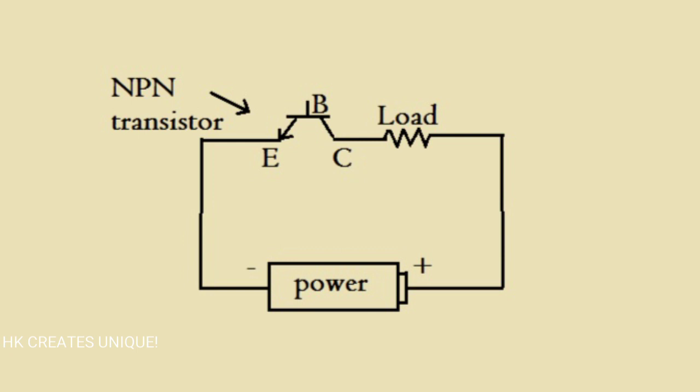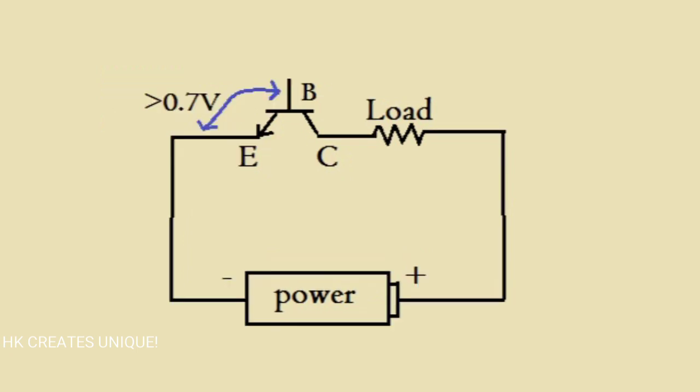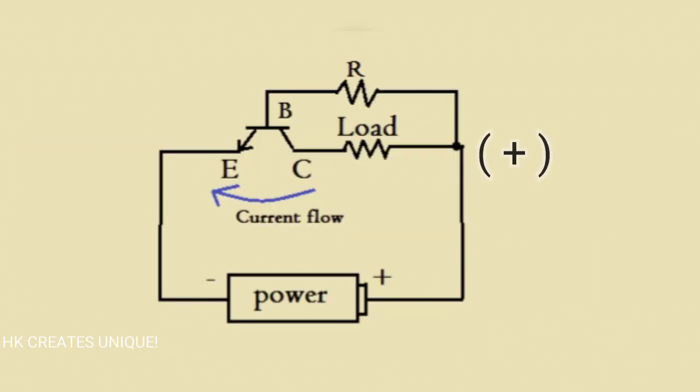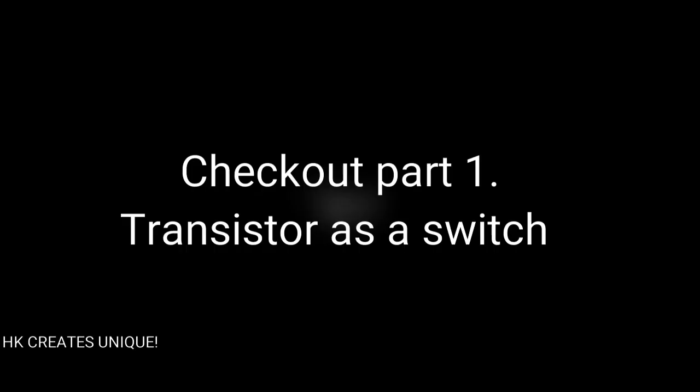A transistor can be connected in a circuit like this. If the voltage across base and emitter goes above 0.7 volts, the transistor starts behaving like a closed key. I have given a voltage at the base terminal directly from the power supply positive terminal with the combination of a resistor. If you are confused so far, check out part 1 of this video series.